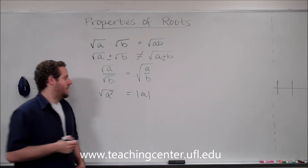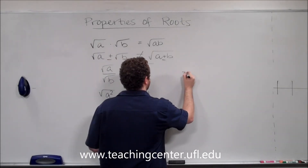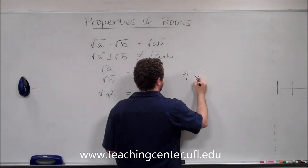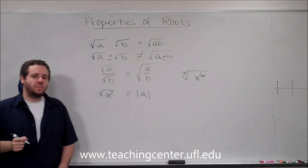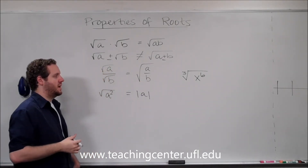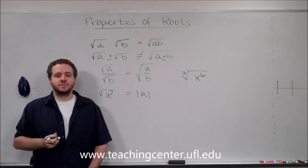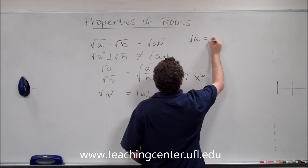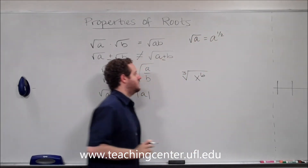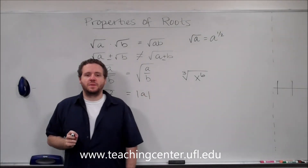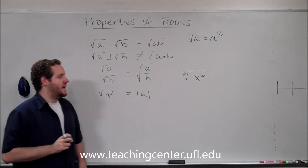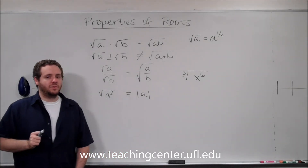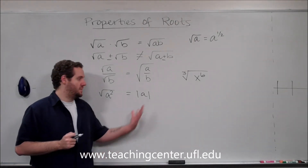Going along with that, if you have a root like the cube root of x to the 6th, there are a couple of ways to simplify it. One way is to think of a root as a power — a square root is the same as the 1/2 power, and a cube root is the same as the 1/3 power. You can use that to simplify the result. However, you always have to be careful about whether your root is even or odd, because that changes whether you get an absolute value or not.